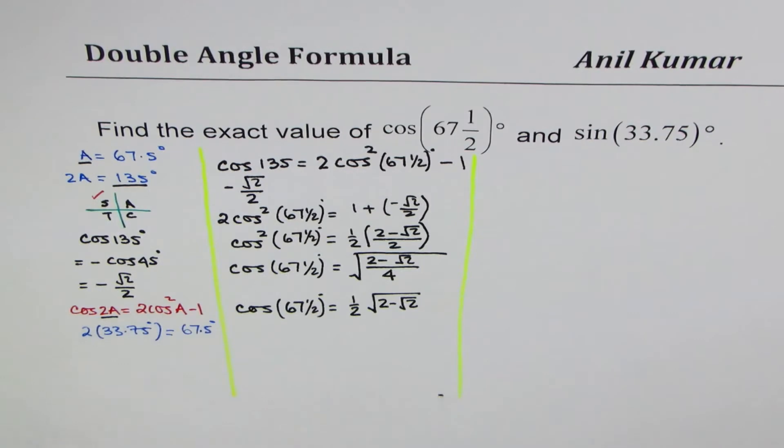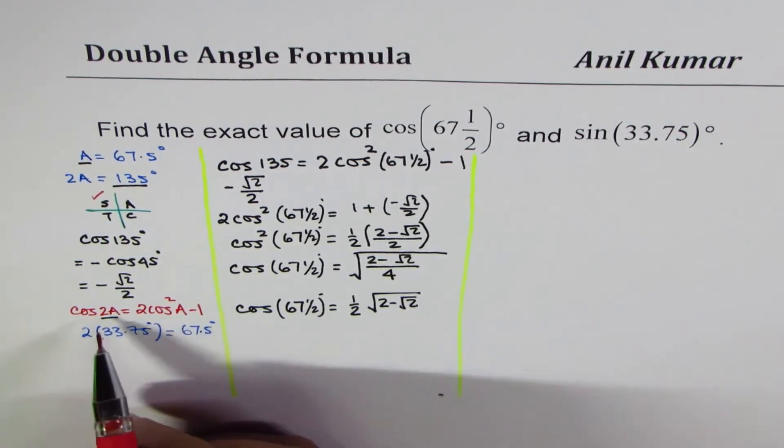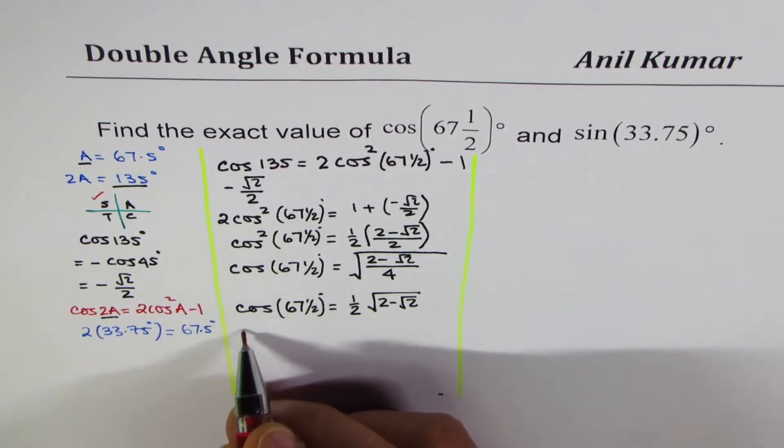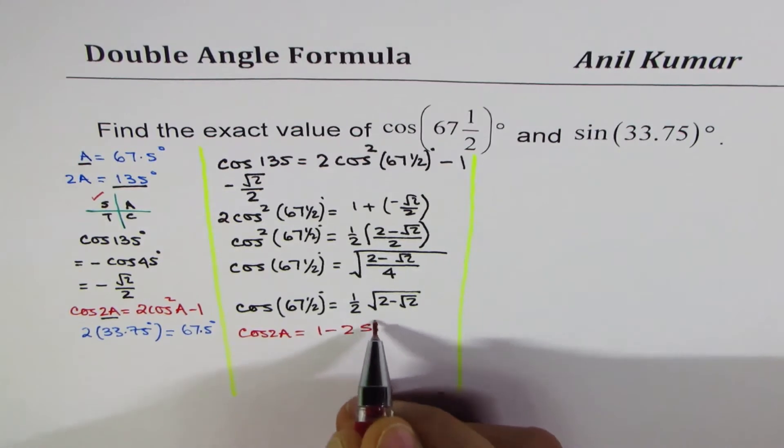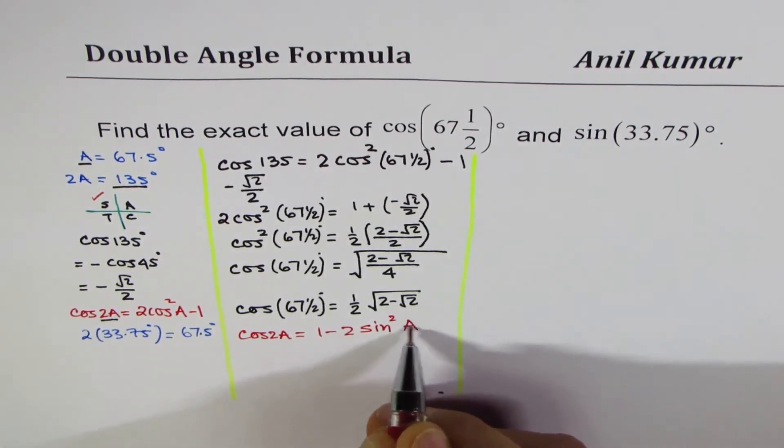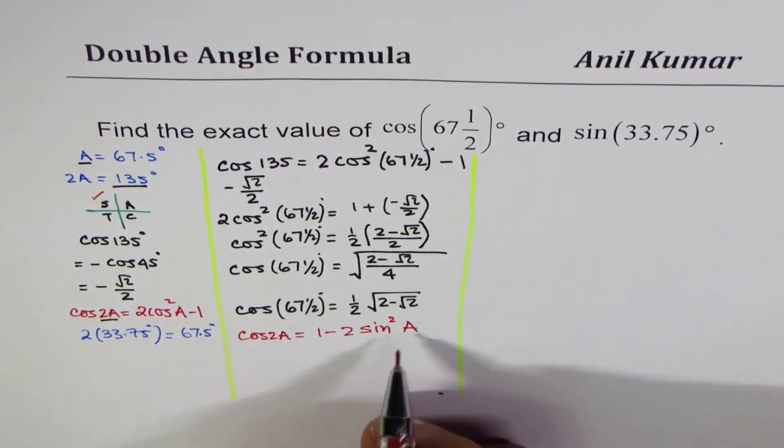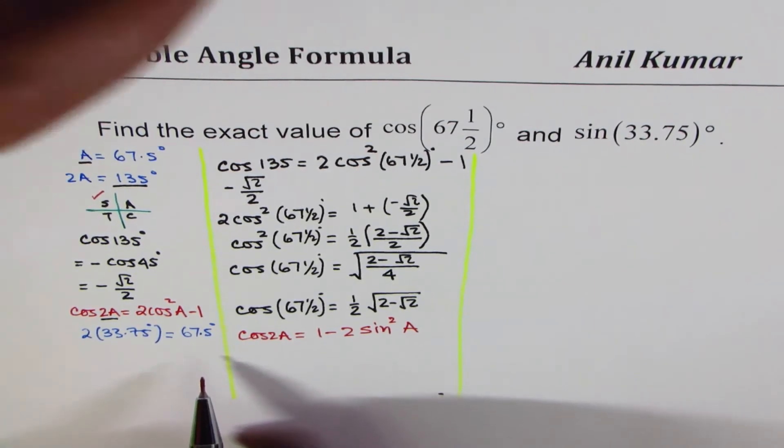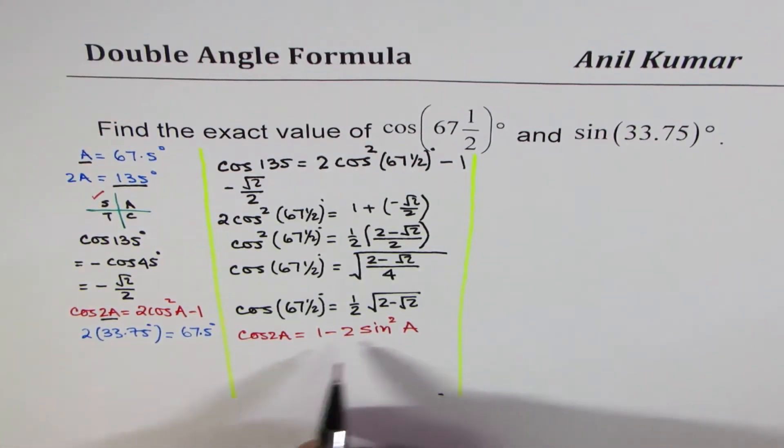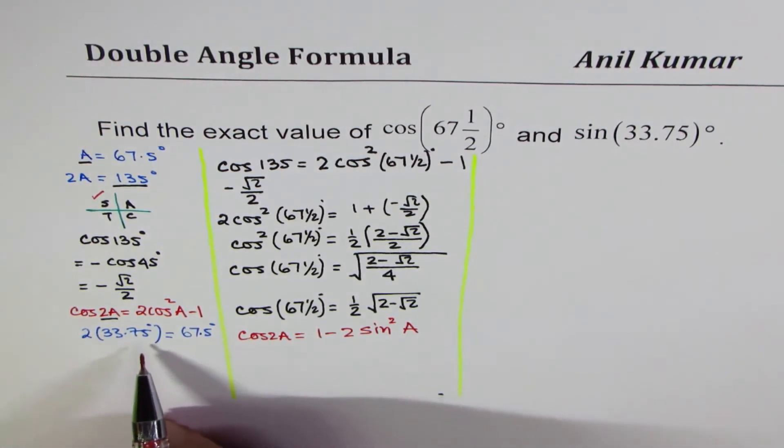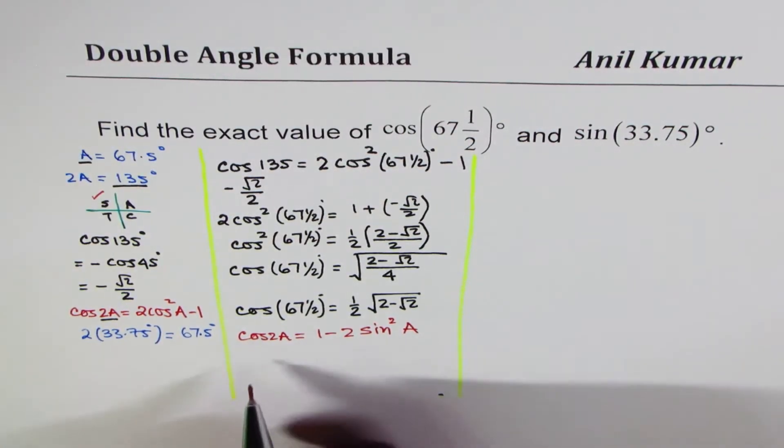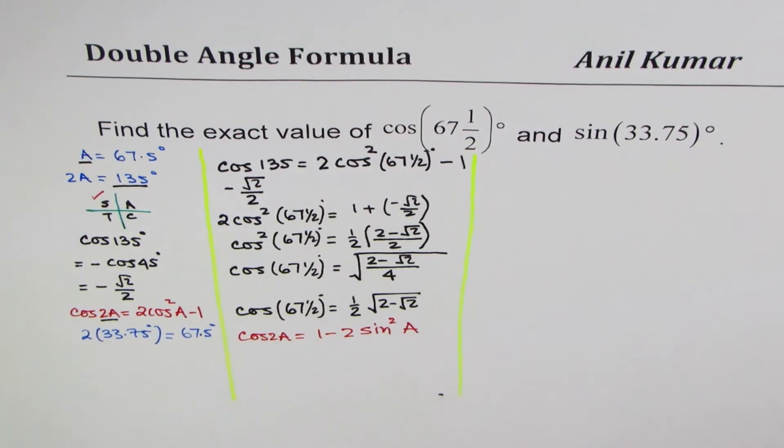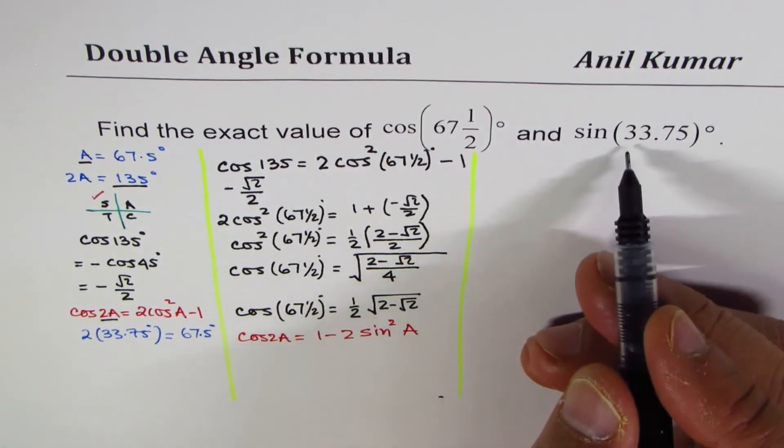So we can again apply this double angle formula. So this time, we will use the other form, which is cos 2A equals to 1 minus 2 sine square A. So in our case now, we will put the angle as 33.75 for A.